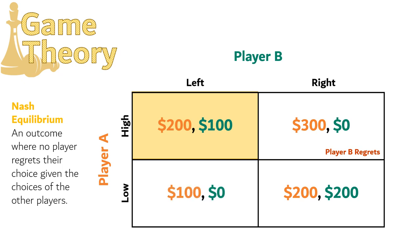The outcome at low left has both players regretting their choice: player A would prefer the $200 at high left, and player B would prefer the $200 at low right. The outcome at low right seems like the best outcome because both players get $200, and a total of $400 for everyone is the best of any outcome. But this is not a Nash Equilibrium because if they landed here, player A would say they should have gone with high — that would get them $300 instead of $200. So this outcome is not a Nash Equilibrium.